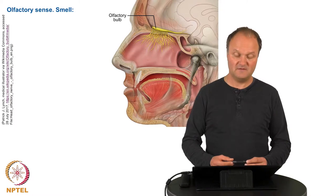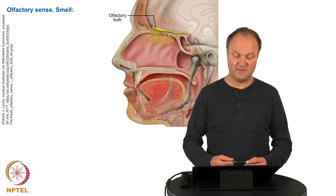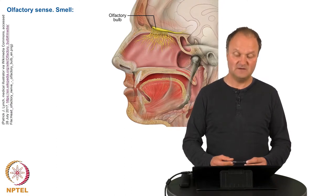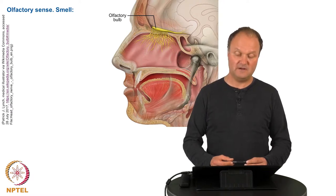The olfactory sense is fully developed at birth, but the judgment of whether we like or dislike something — the so-called hedonic judgment — is learned during the first 5 to 10 years from birth.